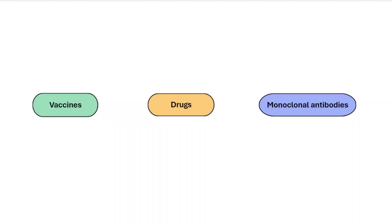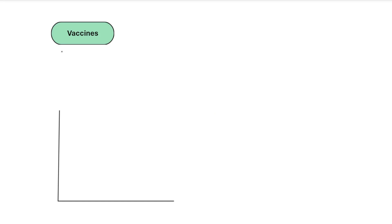In this video we'll be looking at an overview of preventing and treating diseases. There are mainly two things to think about: first, vaccines as a prevention, and second, drugs as treating diseases. You need to know some examples of them, the types of them, and also how drug trials work. For those doing separate sciences, you'll also need to know about monoclonal antibodies.